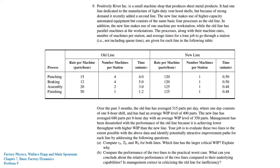In this video we will try to go through and solve a problem from the Factory Physics book by Hopp and Spearman. This problem is in Chapter 7 of the book and it is Problem 9. Basically, this problem is about a company named Positively Rivet Incorporation which produces sheet metal products.